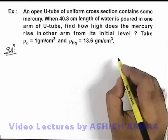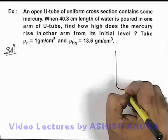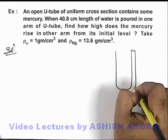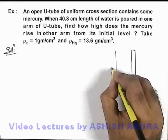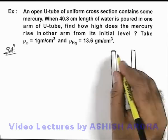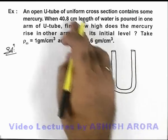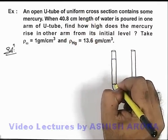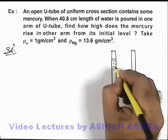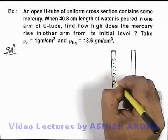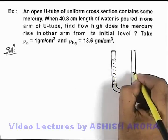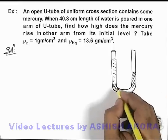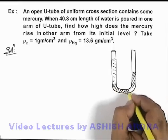Here we can draw the physical situation. If this is the U-tube, in the left arm this 40.8 centimeter length of water is poured. Due to this water, mercury will be pushed down and the mercury level on the other side will be slightly raised, and the situation would be like this.